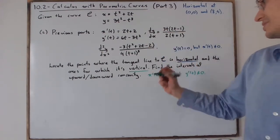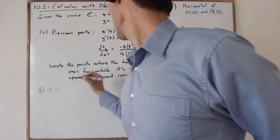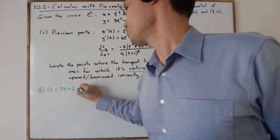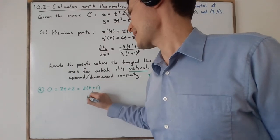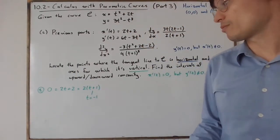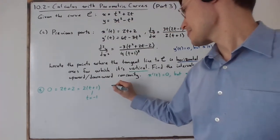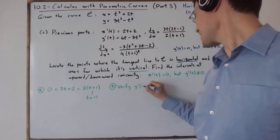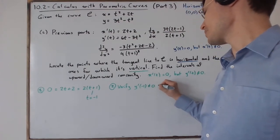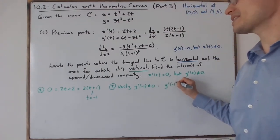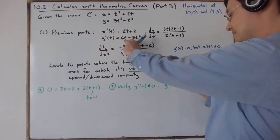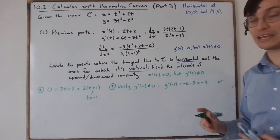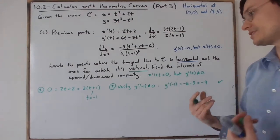Step 1: set x'(t) equal to 0. So 0 equals 2t plus 2, which factors as 2 times (t plus 1). This happens when t equals negative 1. Step 2: verify y'(−1) is not equal to 0. y'(−1) equals negative 6 minus 3, which is negative 9 — we're good. So when t equals negative 1, the tangent line will be vertical.